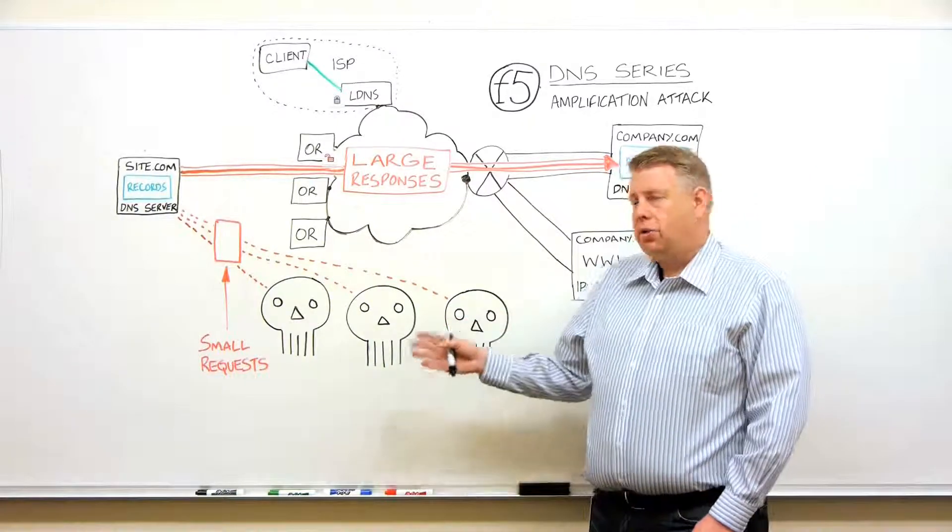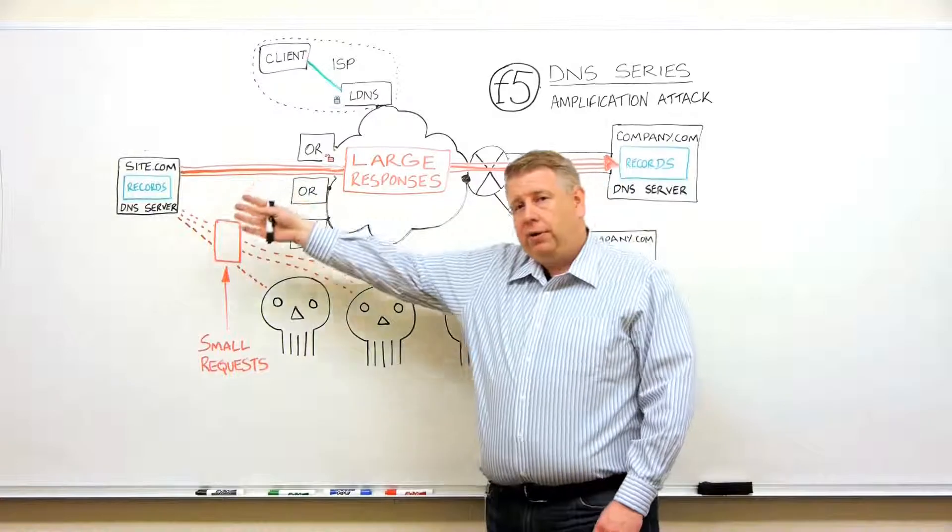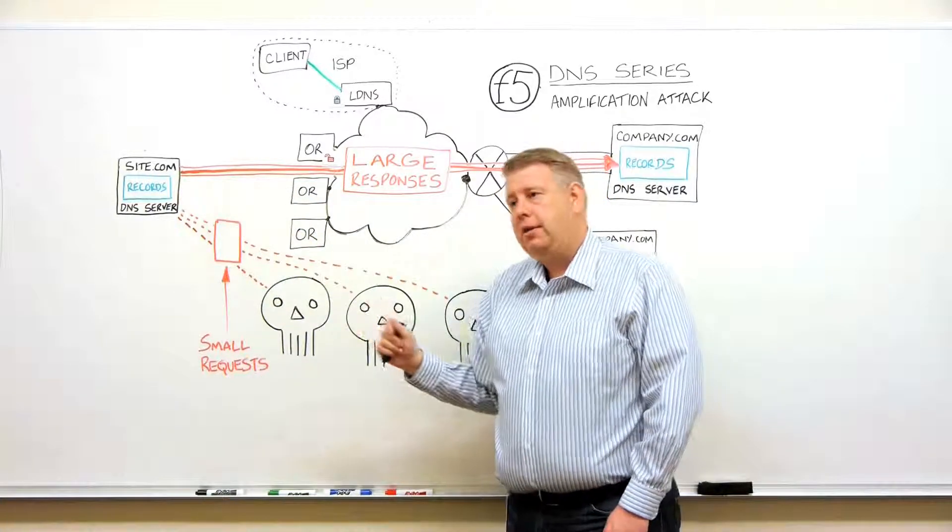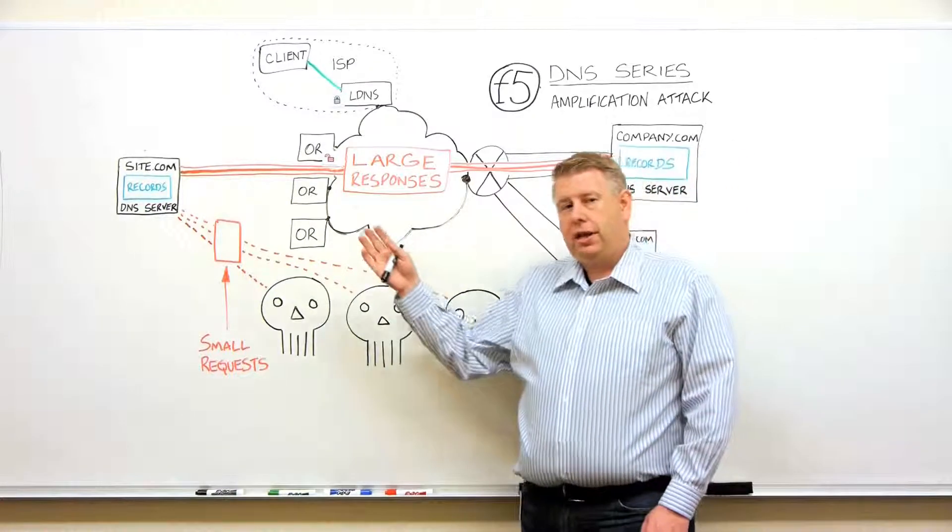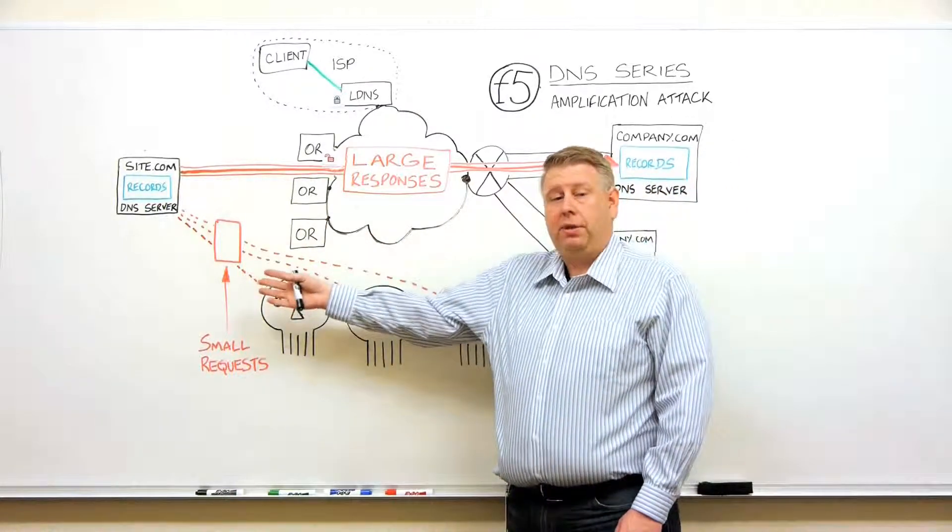Amplification is trying to get a lot more bandwidth from a little bit of bandwidth. If we talked about reflection being an attack where you send some information out and get the wrong address,